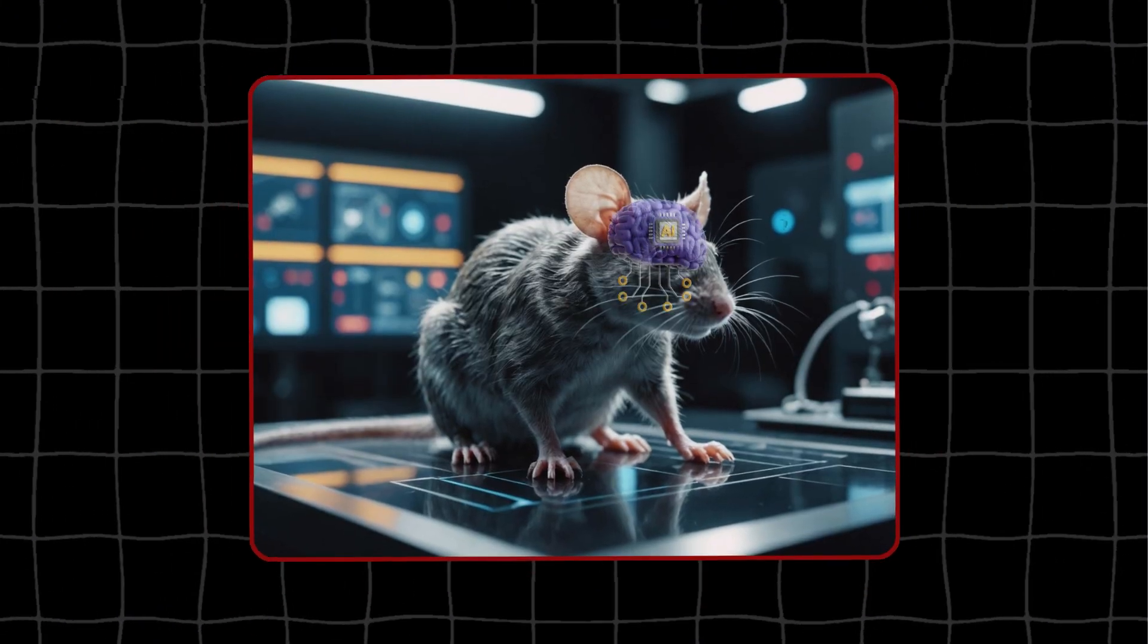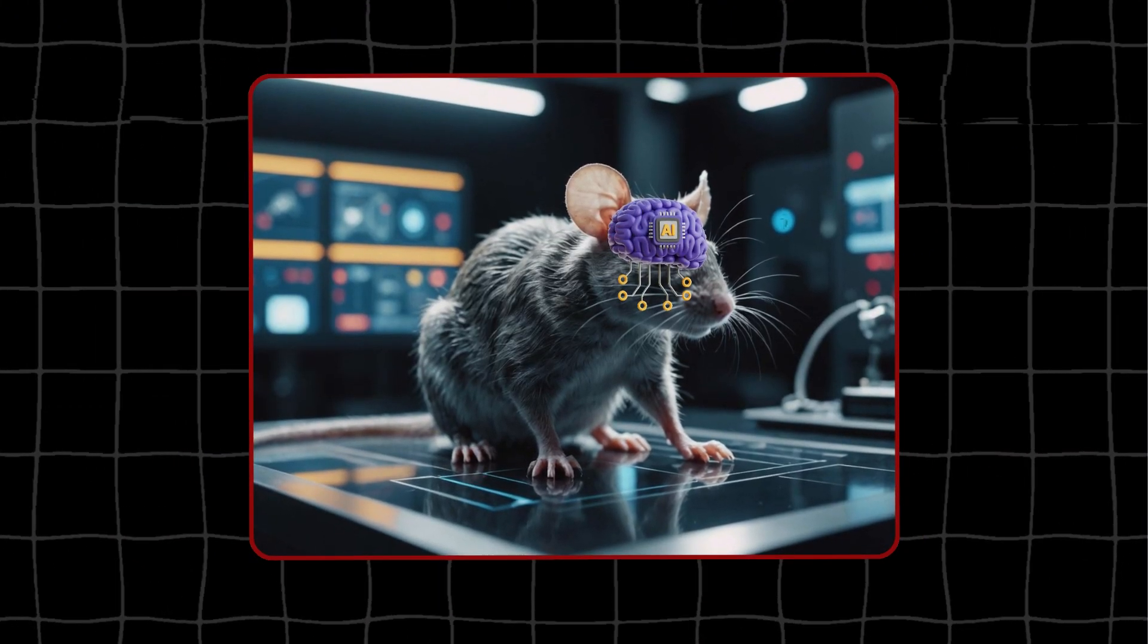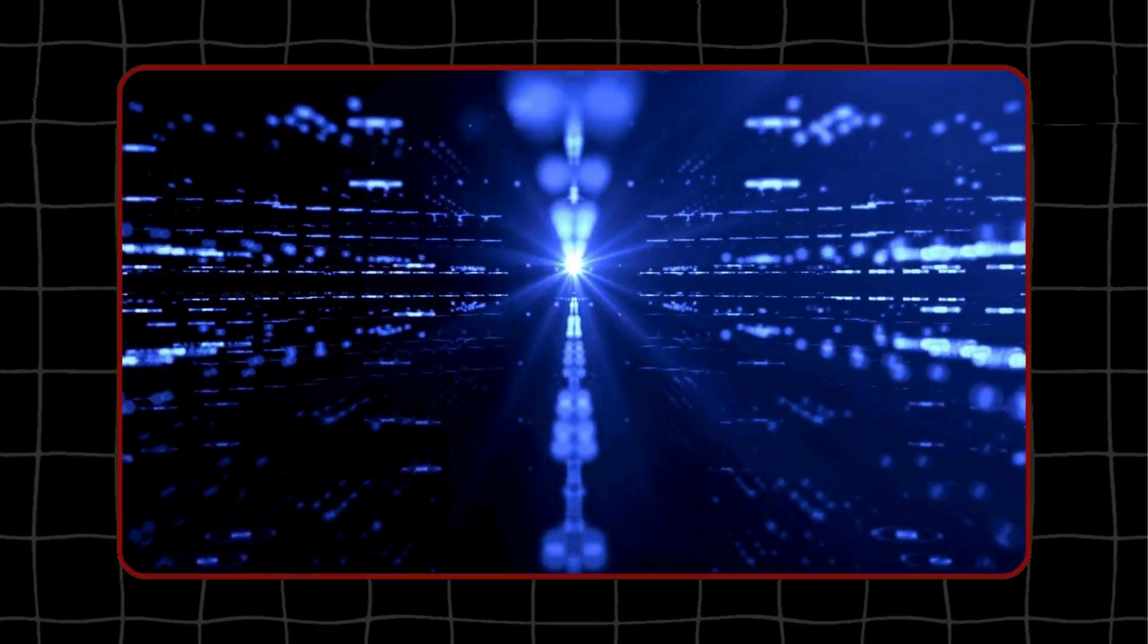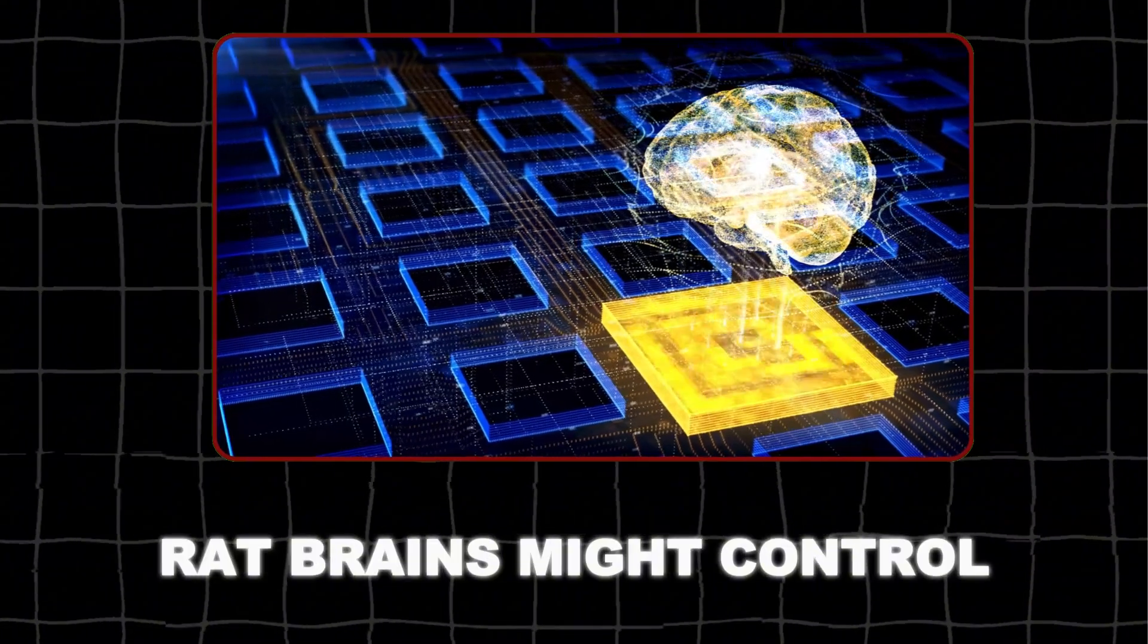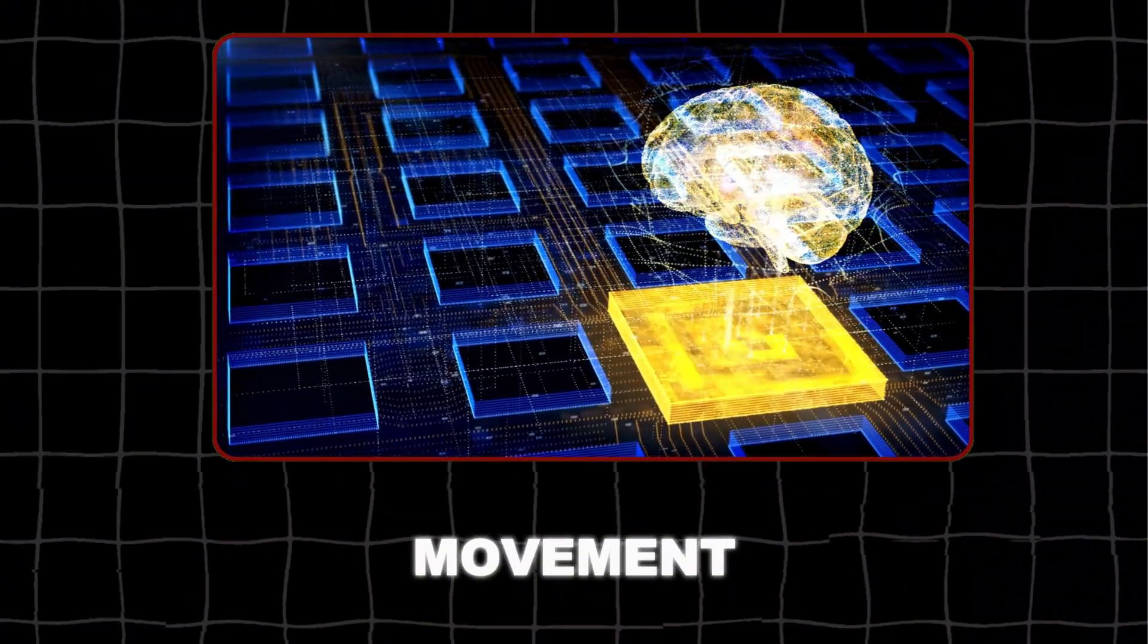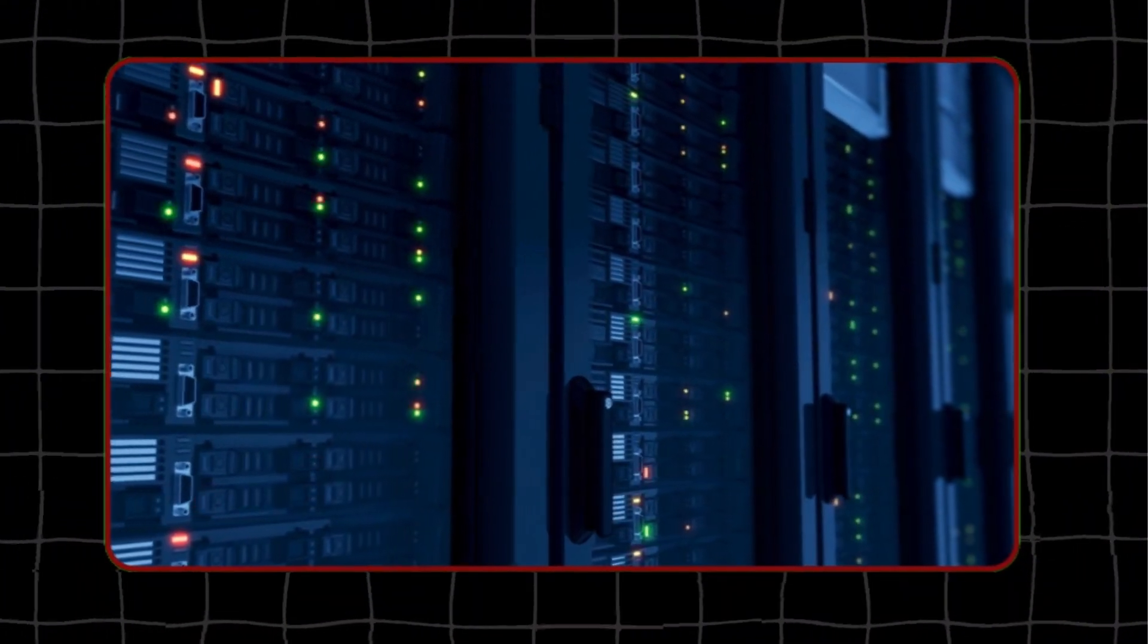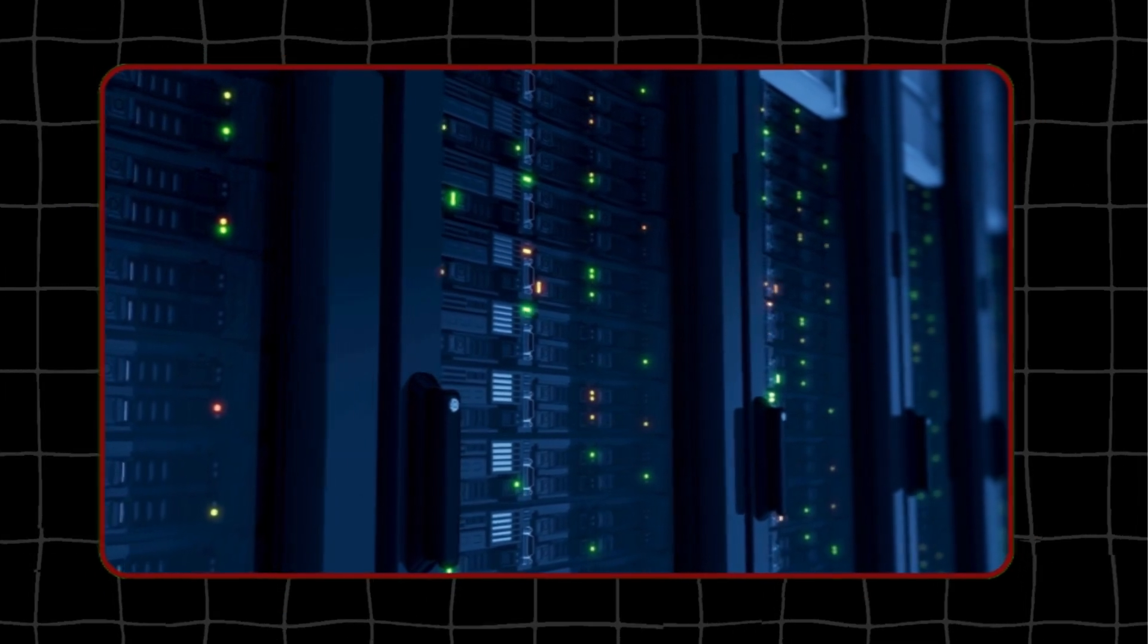With this virtual rat brain successfully controlling the biomechanical model, researchers could go deeper into the workings of the neural network. They could gain valuable insights into how real rat brains might control movement. This step is crucial for understanding the neural mechanisms underlying motor control and behavior.